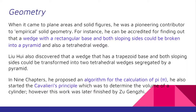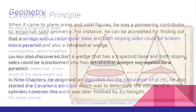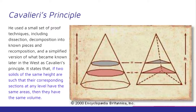In the Nine Chapters, he proposed an algorithm for the calculation of pi. He also initiated Cavalieri's principle, which was used to determine the volume of a cylinder; however, this work was later finished by Zhu Gengzhi. He used a small set of proof techniques including dissection, decomposition into known pieces and recomposition, and a simplified version of what became known later in the West as Cavalieri's principle. It states that if two solids of the same height have equal areas at every corresponding cross-section, then they have the same volume.